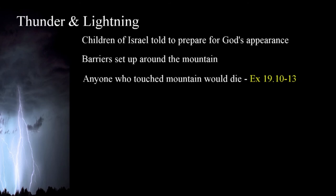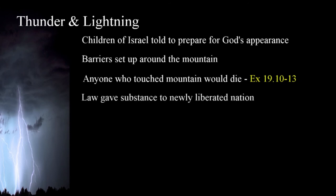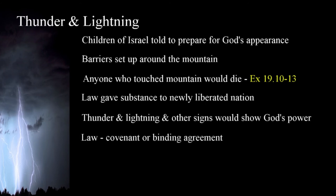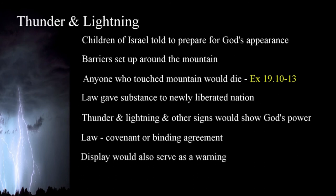The Hebrews had already seen the power of God in action as ten plagues struck Egypt. Now, free of their slavery, they stood at the base of the mountain of God in Sinai where they were to receive a covenant from the Lord. This wasn't just a list of rules that had to be followed. The law delivered to them by Moses gave substance to their newly liberated nation. The appearance of God, accompanied by thunder and lightning, would impress on their minds that the Lord is a being who could perform what he promised them. The law would then be a binding agreement or covenant in which God stated the conditions for the continuation of his blessings on them. The display at Sinai would also serve as a warning that if they chose to do evil, the Lord would deal with them according to their rejection and rebellion.